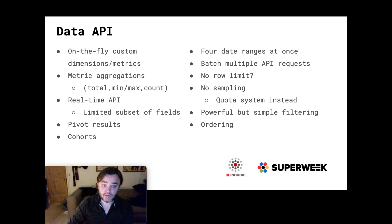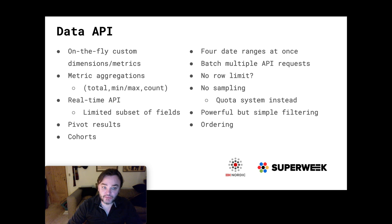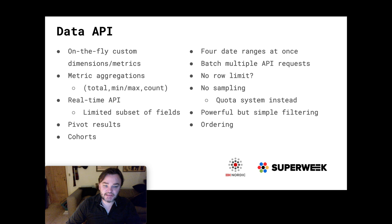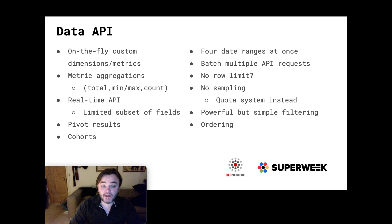These are the main features I've noticed working on the API, concentrating on differences above the v4 Reporting API for Universal Analytics. You've got on-the-fly custom dimensions, which wasn't possible before. You've got metric aggregations to quickly get totals, minimum, and maximum counts. The real-time API is really easy to use and uses all the same features as the other API, which is really nice - though it is a limited subset of fields, as things like sessions don't make sense in the real-time API.